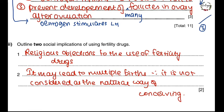Moving on to the last question: outline two social implications of using fertility drugs. This is a pretty uncommon question, so you should know the answer. Firstly, religious objections or ethical concerns — religious objections to the use of fertility drugs. Secondly, it may lead to multiple births, just like IVF, because fertility drugs also lead to multiple births. It is not usually considered a natural form of conceiving or giving birth, which is one of the reasons it is seen as a social problem sometimes.